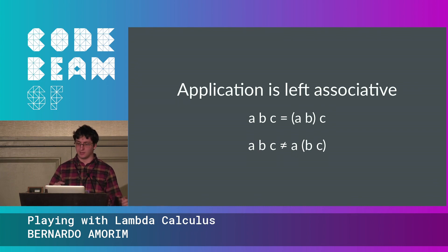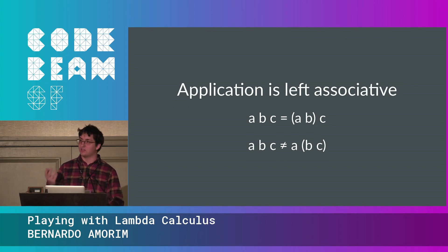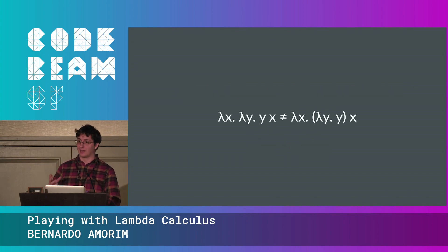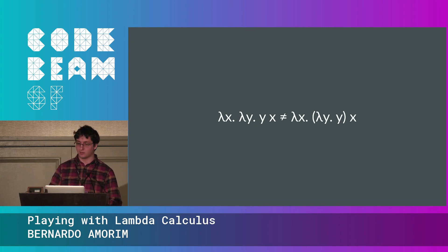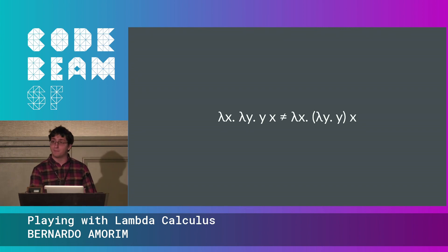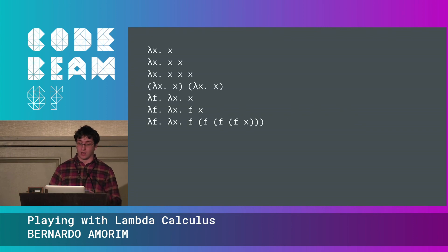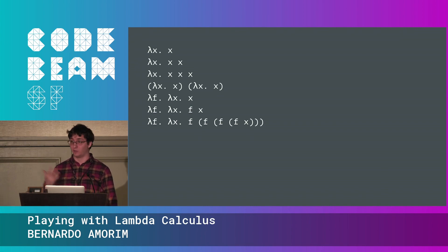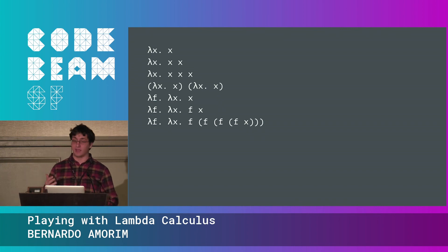In left-associative application, 'a b c' means apply a to input b, then apply that result to input c. You can use parentheses to change the order of application or to delimit where a function definition ends, since everything to the right is the body. With these constructs you can build very complex terms — from a simple identity function that returns whatever it receives, to one that applies a function to an argument four times.